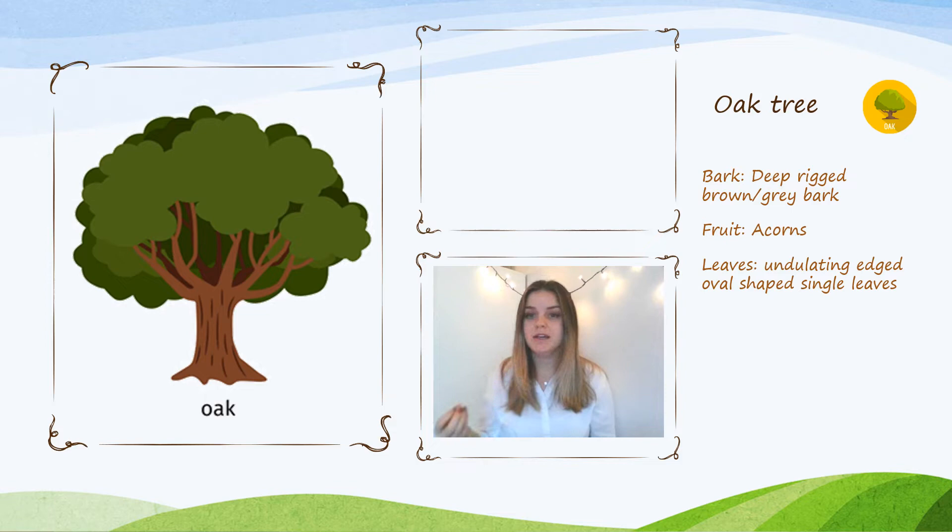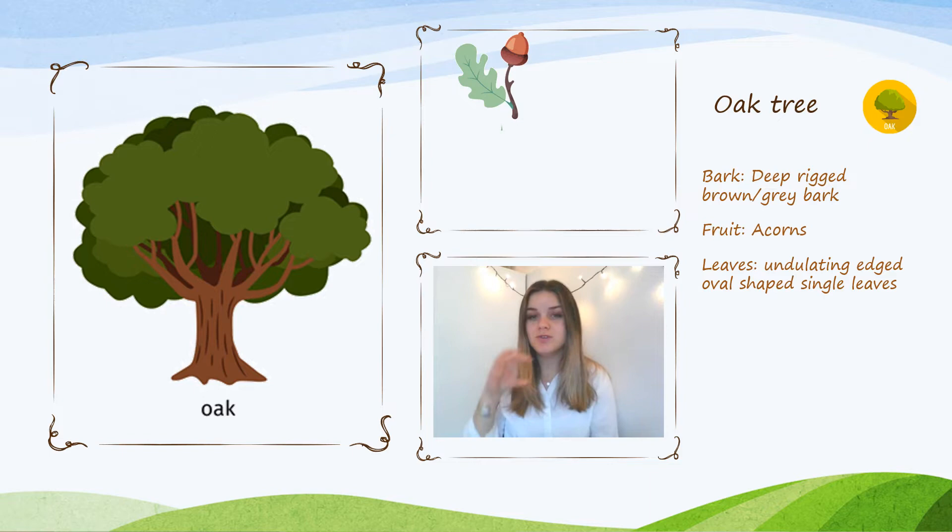The bark has more things sticking out of it as the tree gets older. The fruit of an oak tree is the acorn — it's a special kind of nut fruit that has a cap on it and it grows individually on trees.